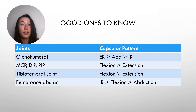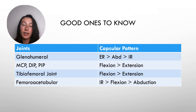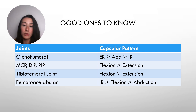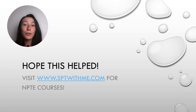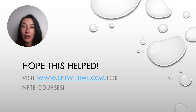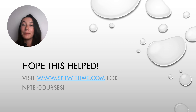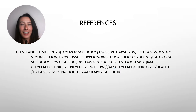For example, the shoulder joint is mostly limited in external rotation, then abduction, then internal rotation. With the hip joint, the most limited range is into internal rotation, then flexion, then abduction — completely different between the two, even though they are similar in a sense. Hopefully capsular patterns actually make sense now. If you enjoyed this content, check out sptwithme.com for our three and six hour NPTE mini course. Last but not least, take a look at the reference shown if you need any more information.